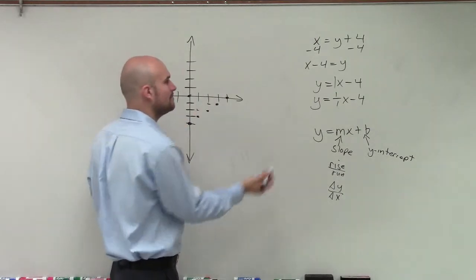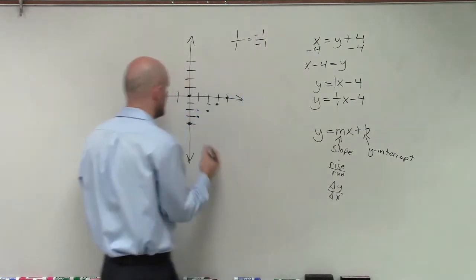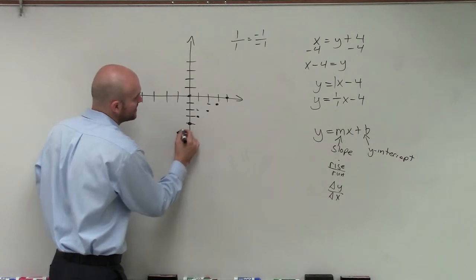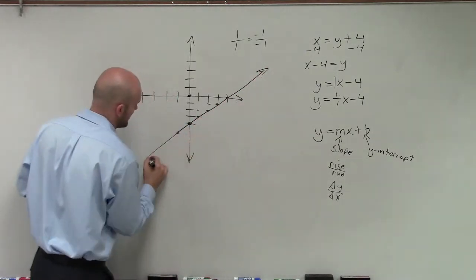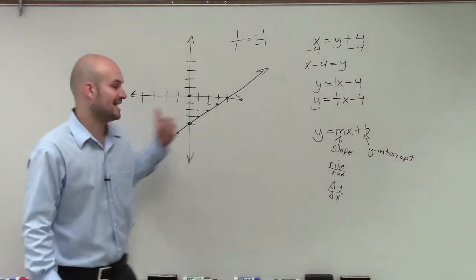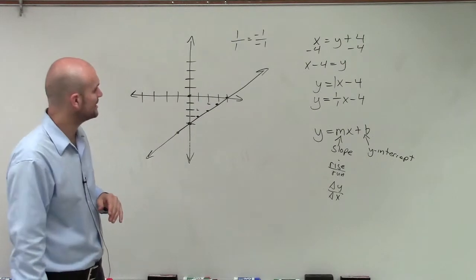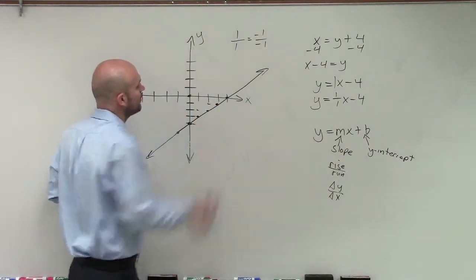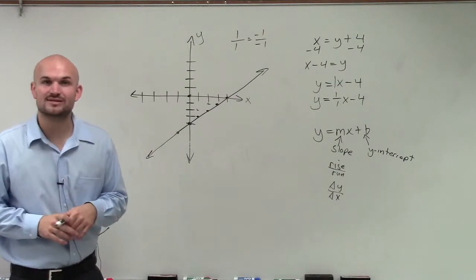Also notice that 1 over 1 equals negative 1 over negative 1, so I could also go in the negative direction. Then I can connect my points to create a line. Remember, this pattern continues infinitely in the positive and negative direction, connecting all points to form our linear equation. That is how you graph in slope-intercept form.